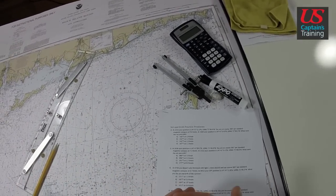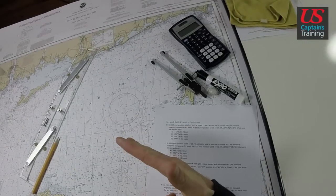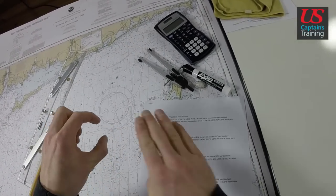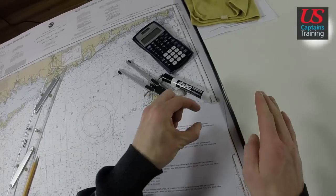We need the starting point, the ending point, the course that we traveled, the distance down that course, then we can measure the set and the drift.